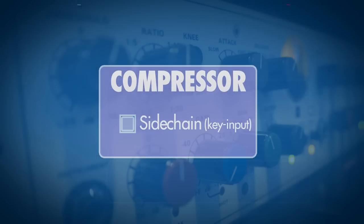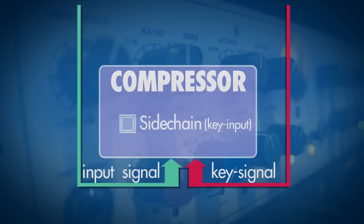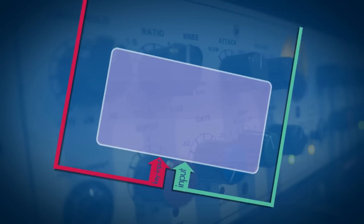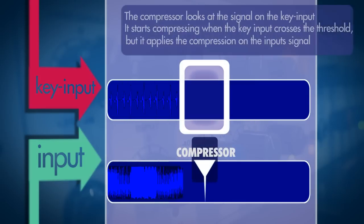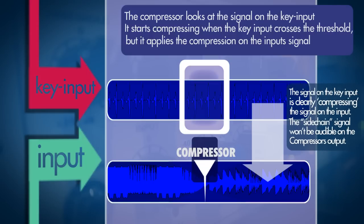One thing I haven't covered yet is the sidechain, also called key input, which is used to control the compressor with a different signal. Here's an example: we have a music track and a voiceover track, and we want the music to get softer whenever the voiceover speaks, so it doesn't interfere with the voice. To do this, we send the vocal to a key input on the compressor that's inserted on the music track.